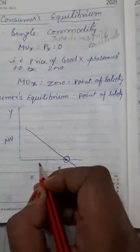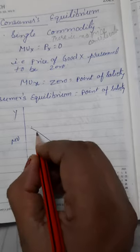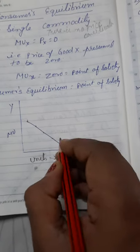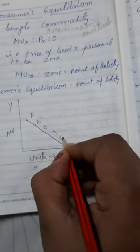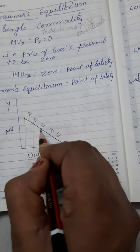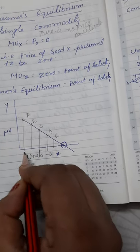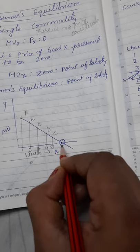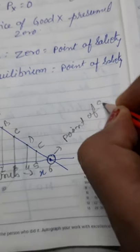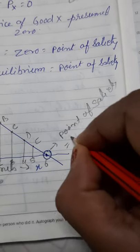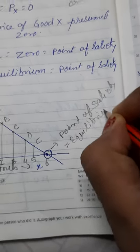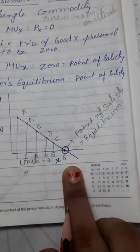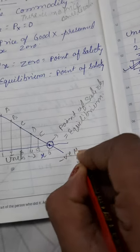From this graph that I have explained, this is the MU on y-axis, units of goods on x-axis. And these are the points of MU. How MU diminishes? That is A, B, C, D, E after every consumption of the unit. The marginal utility diminishes. On the sixth consumption it becomes zero. That is called point of satiety and equilibrium. After this the customer doesn't need to purchase or consume because it will give the negative MU.